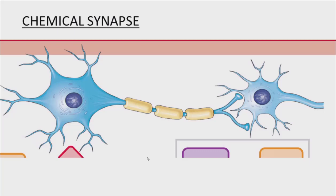So far we've looked exclusively at how action potentials get propagated down the length of the neuron to the axon terminal. This lecture explores what happens once you get to that axon terminal — what's the next step.